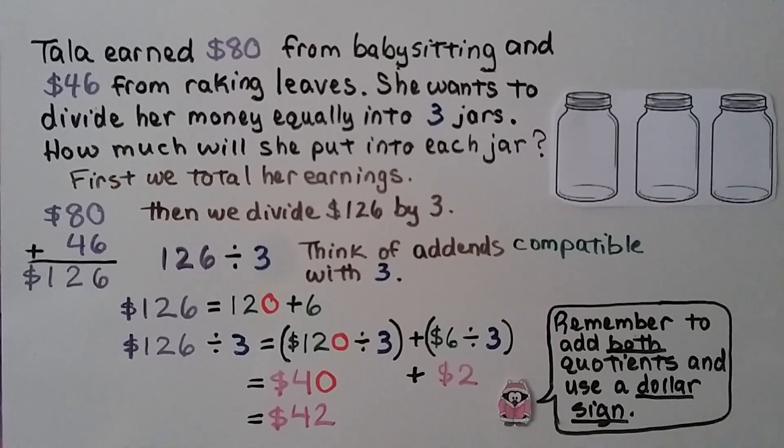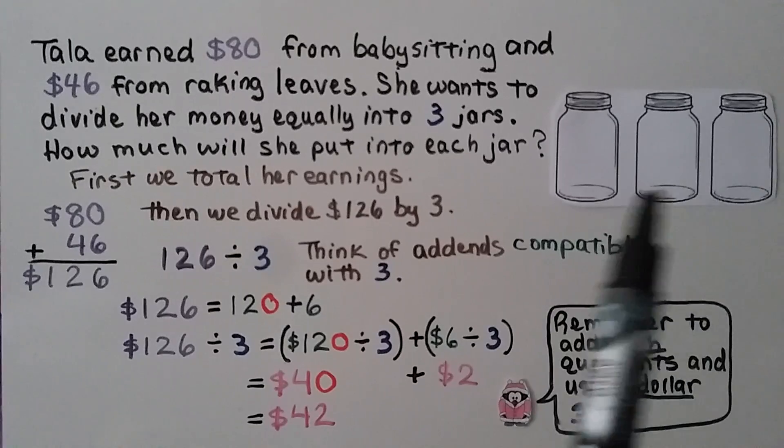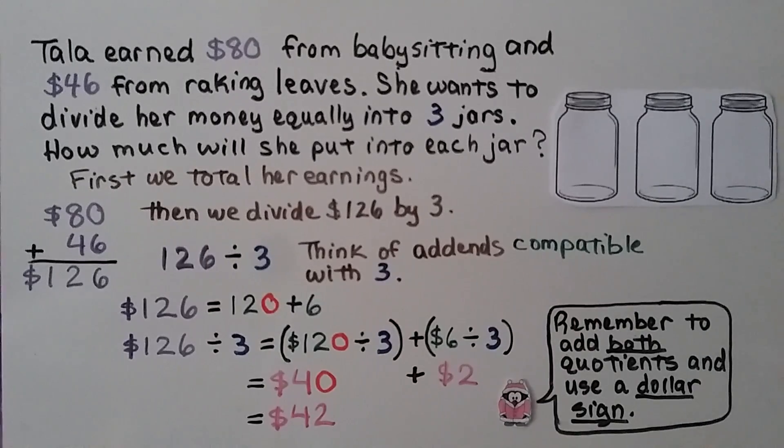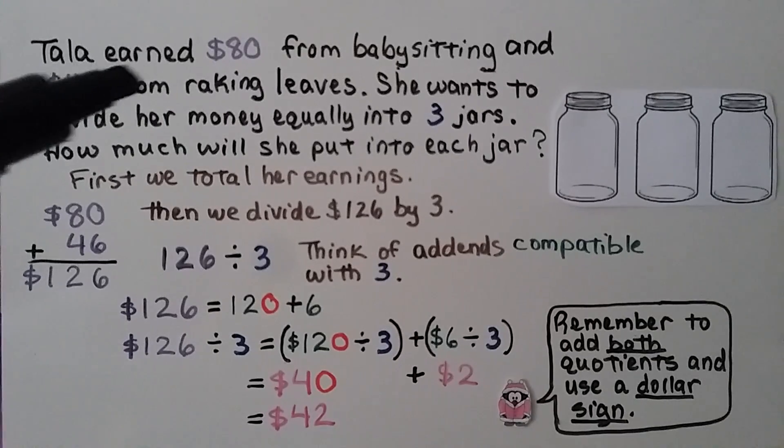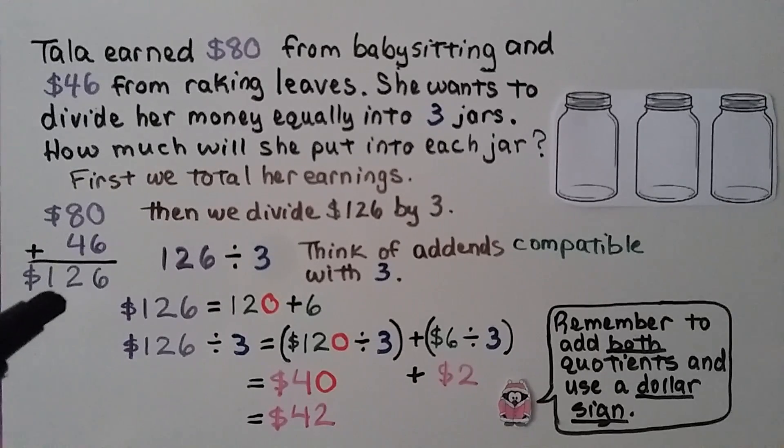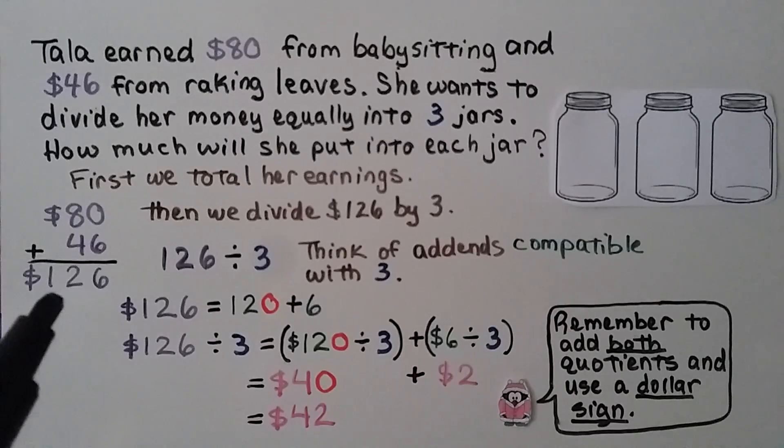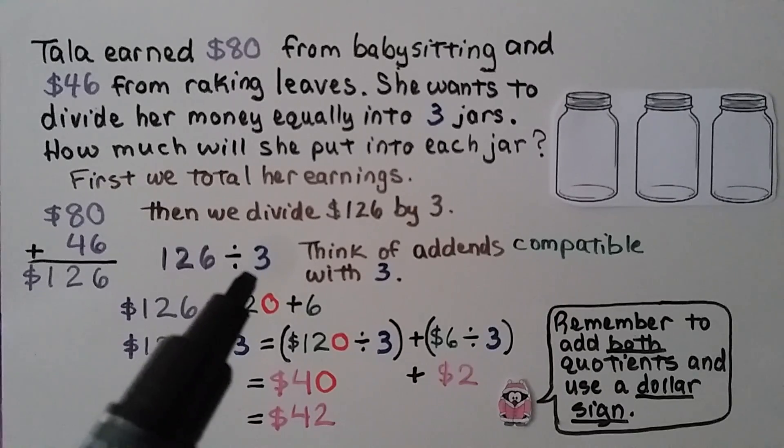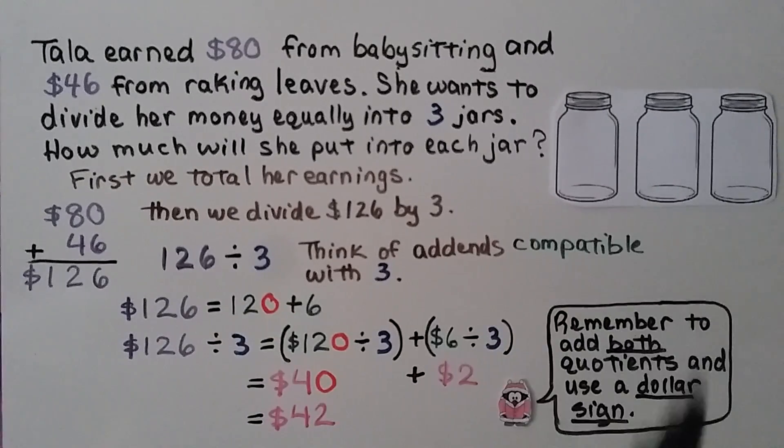Tala earned $80 from babysitting and $46 from raking leaves. And she wants to divide her money equally into 3 jars. So how much will she put into each jar? So first, we total her earnings. She made $80 and $46. We add them. We get $126.